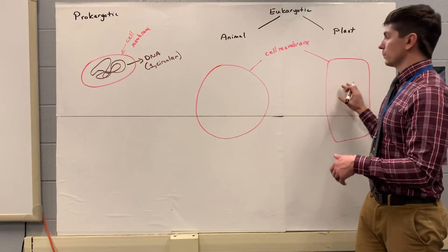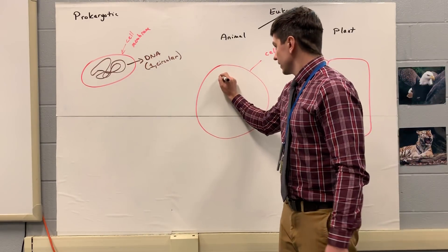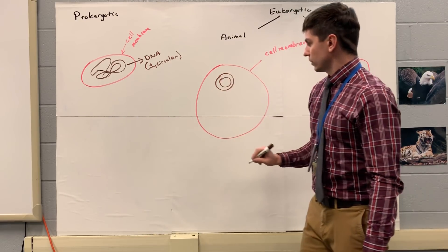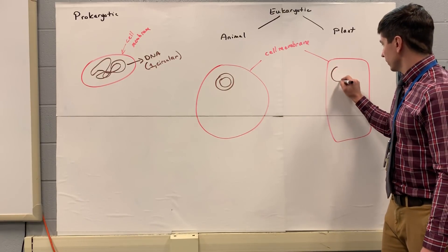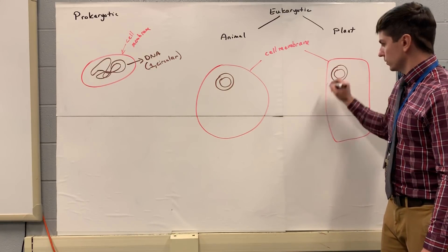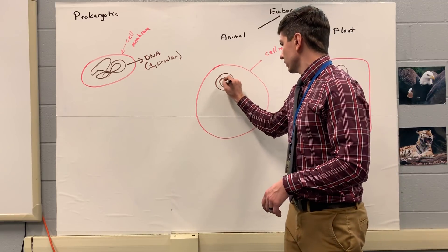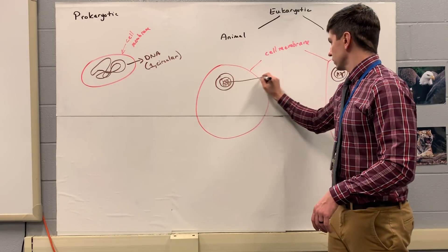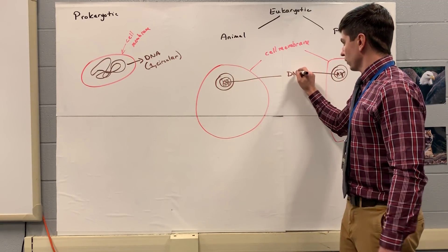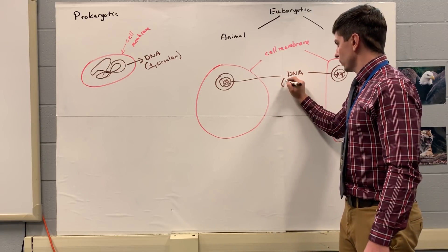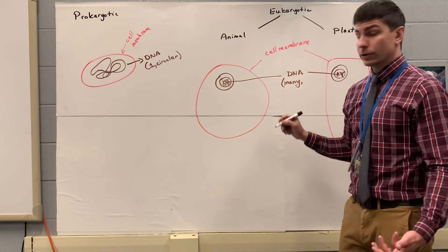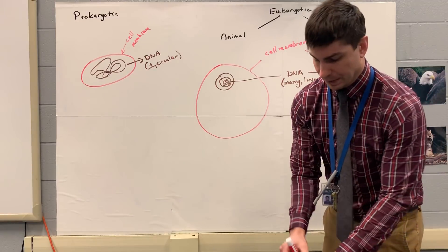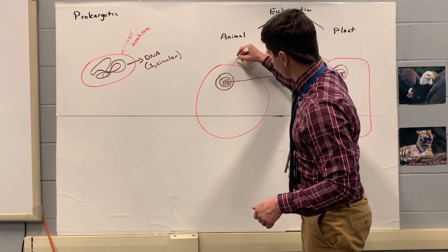A little different for our animal and plant cells compared to our prokaryotic cells — we're going to have our nucleus, and inside of our nucleus, we're going to have our nucleolus. Our DNA is going to be inside there. For plants and animals, the DNA — we're going to have many of them, and instead of being circular, they're going to be linear. So I'll label the nucleus and the nucleolus on both.